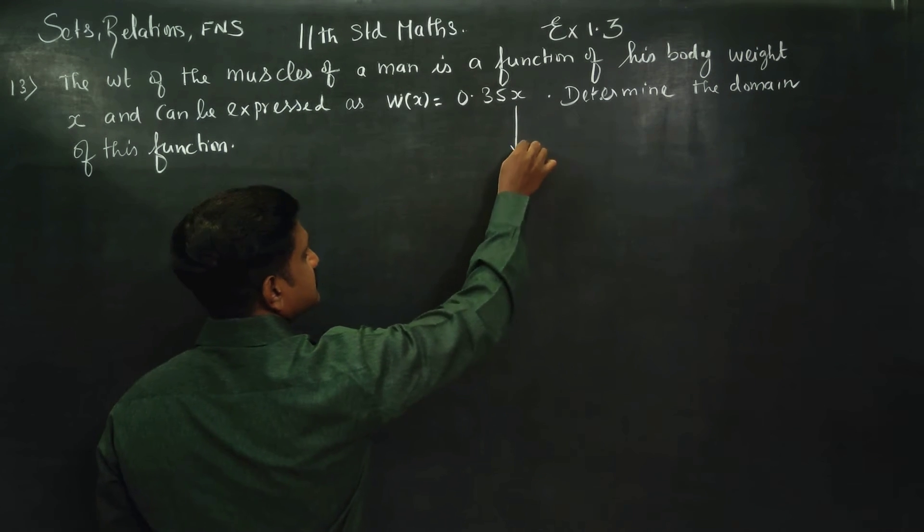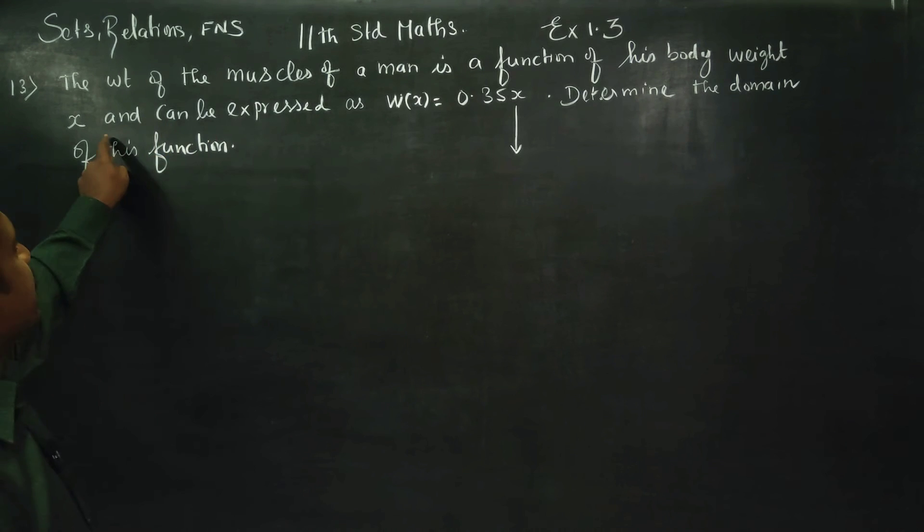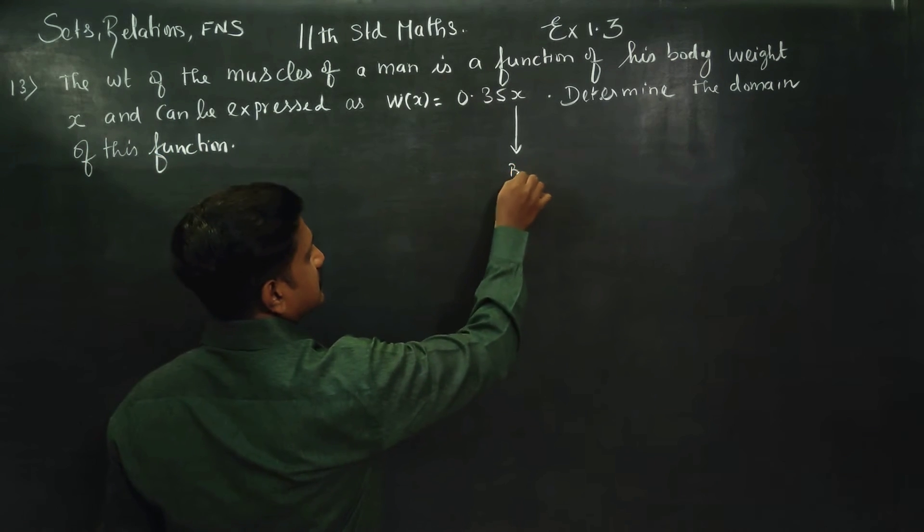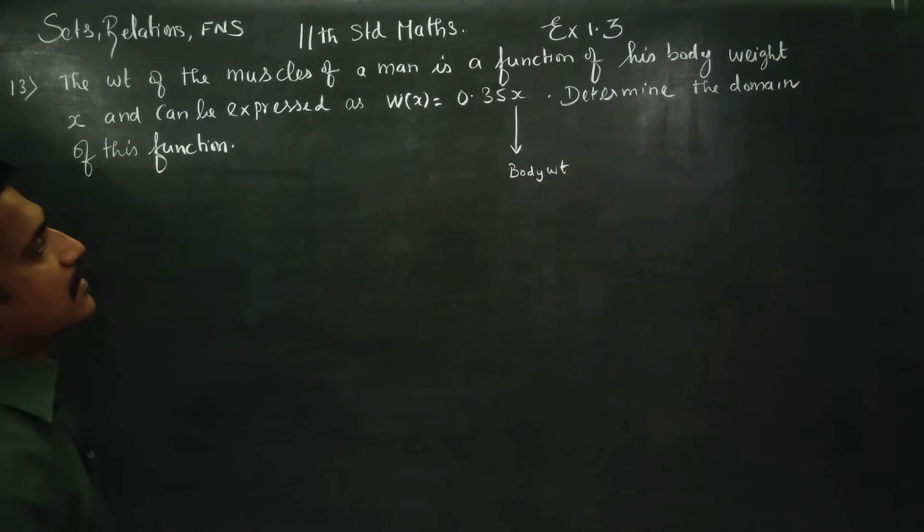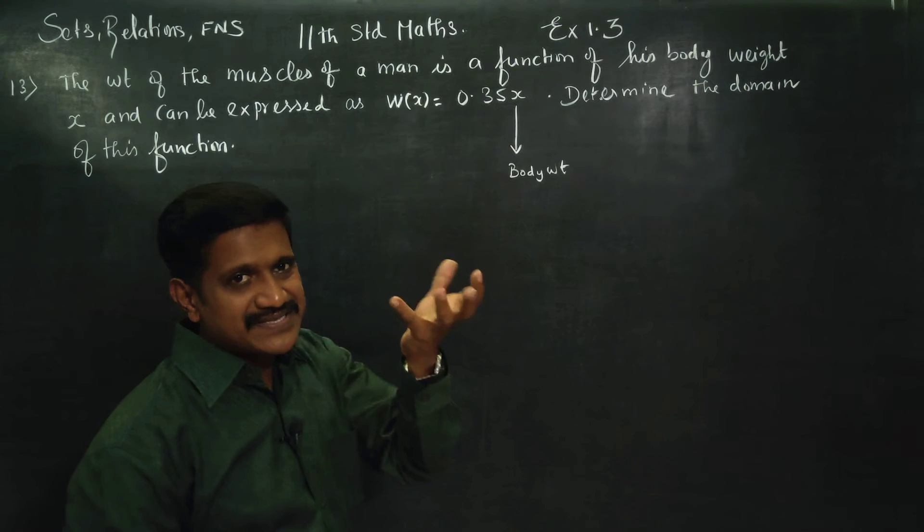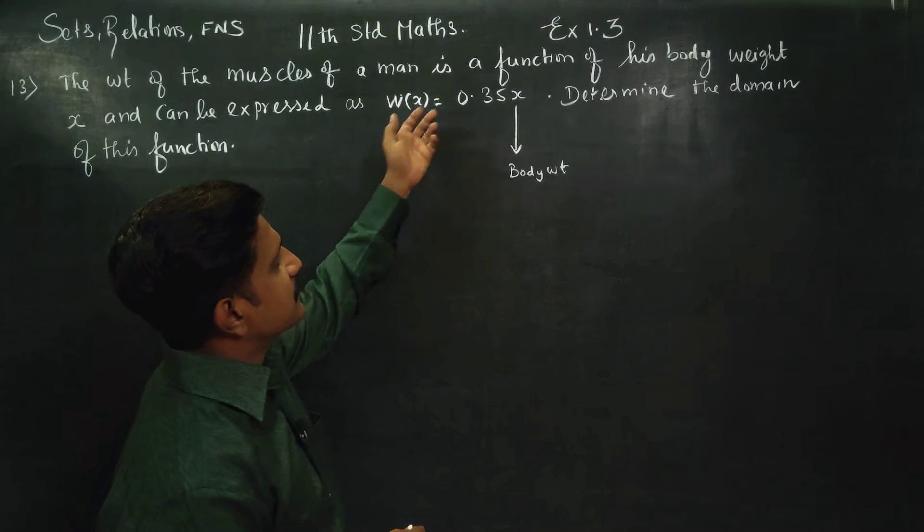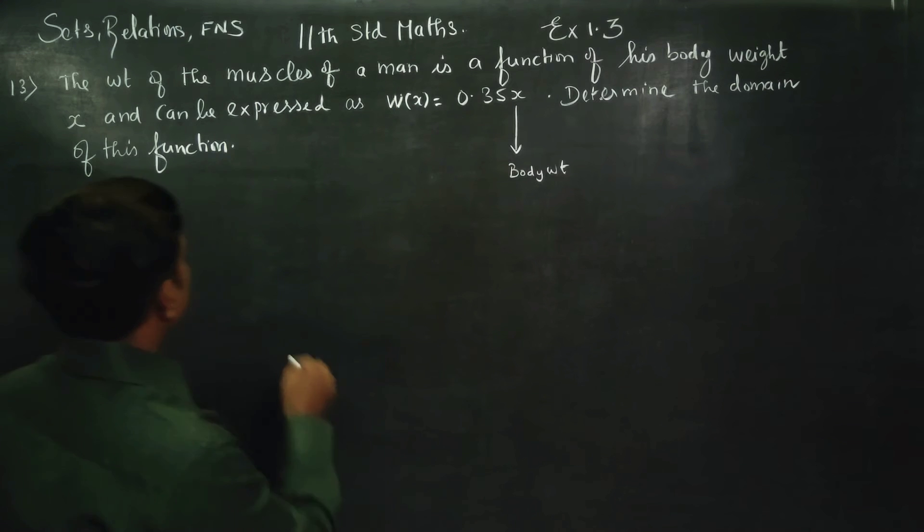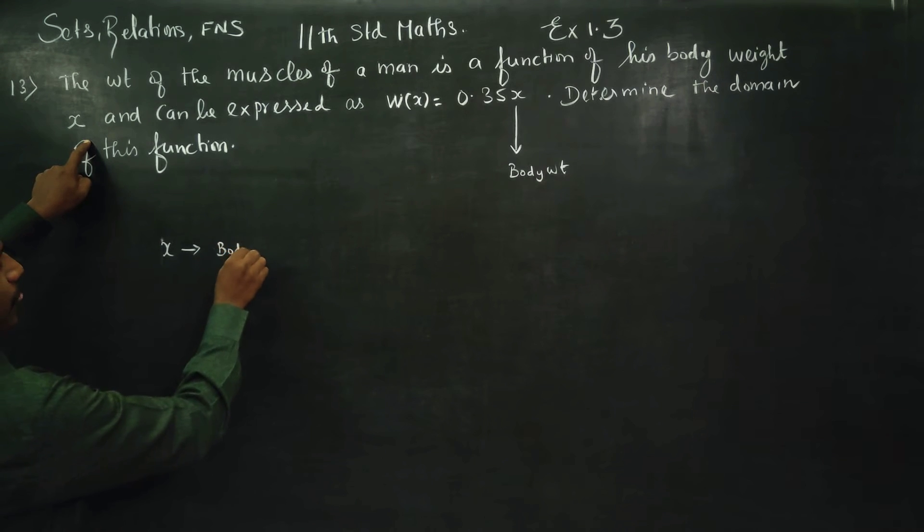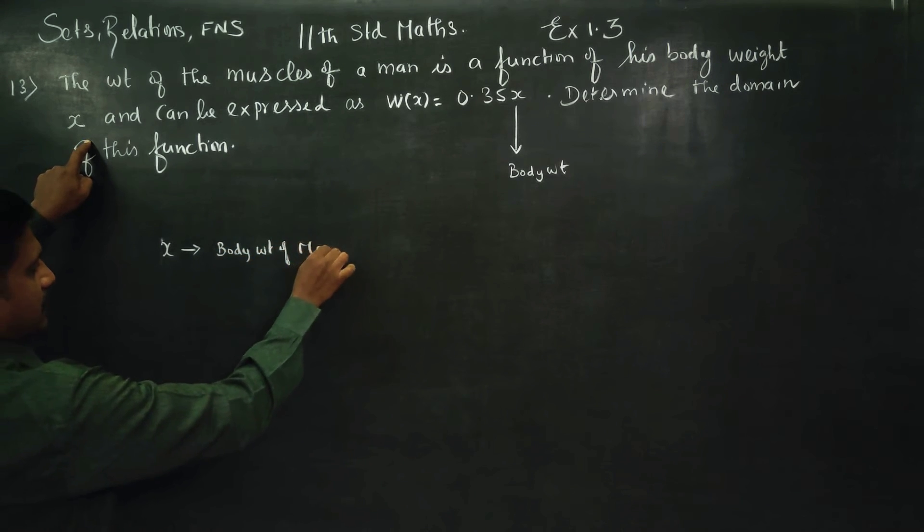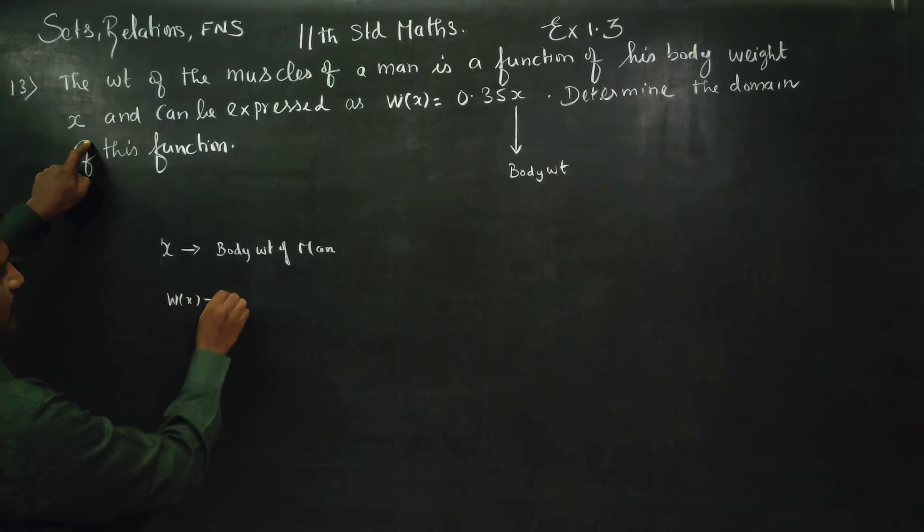Actually, this is body weight. x is body weight of a man. And, 0.35 in the middle of this function, muscle weight is a function of body weight. Then w(x), then x is the body weight of a man, and w(x) is muscle weight.